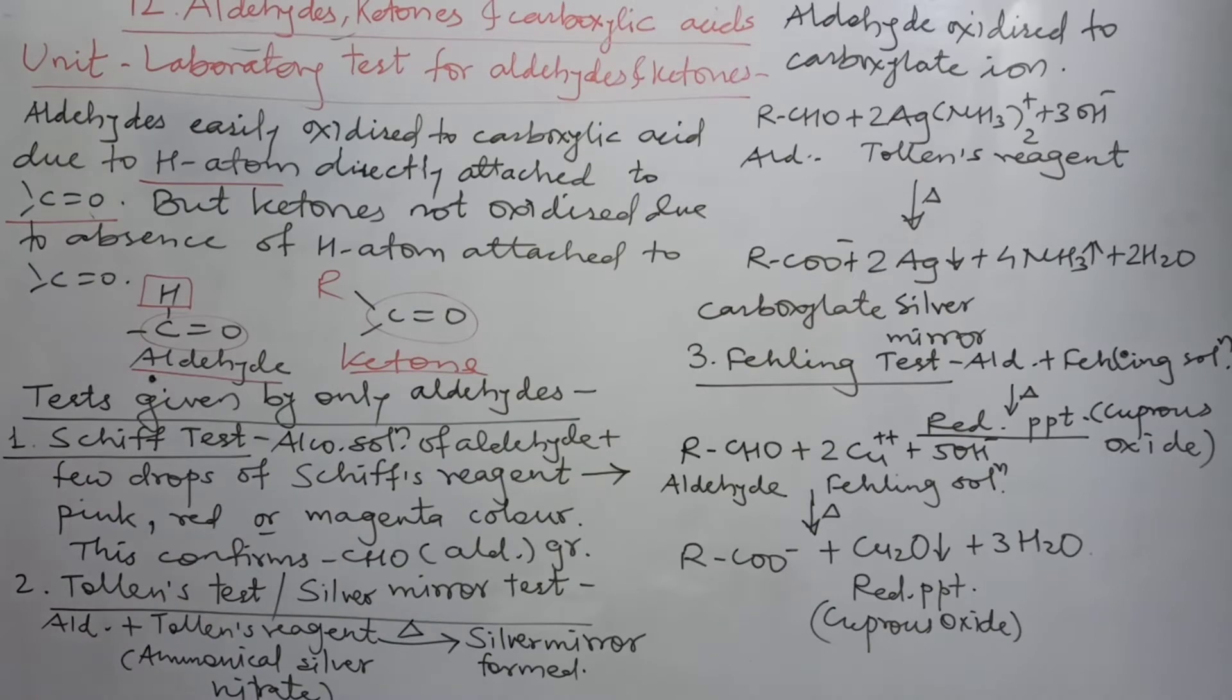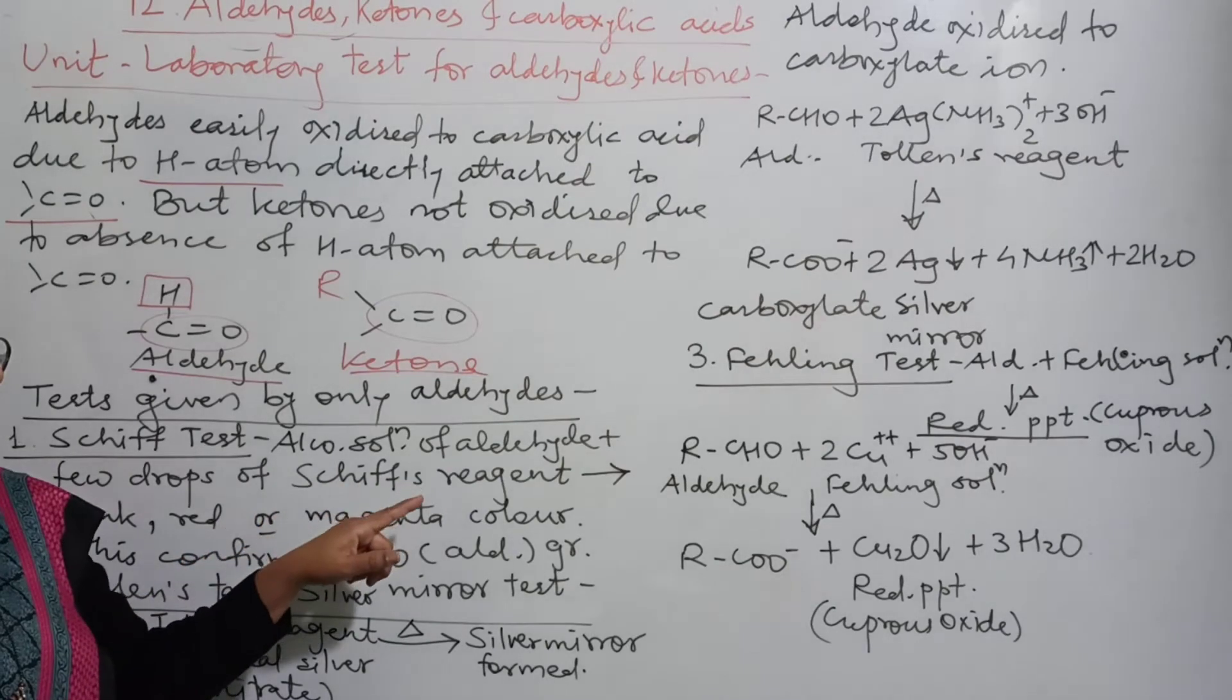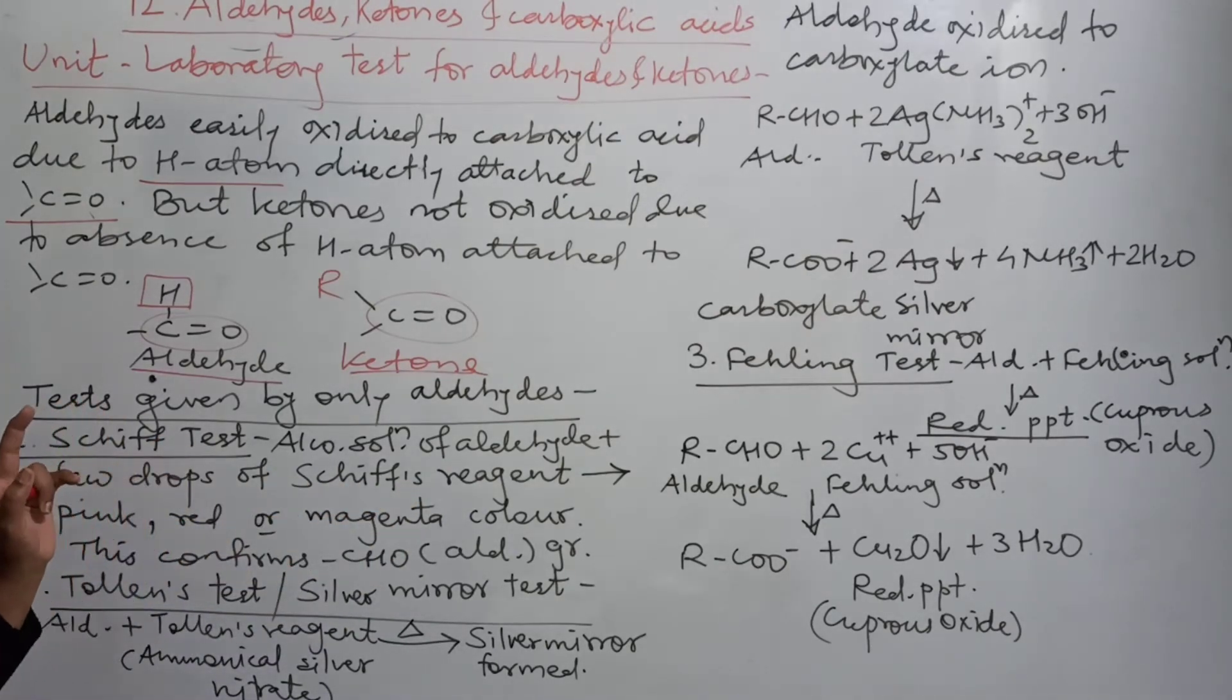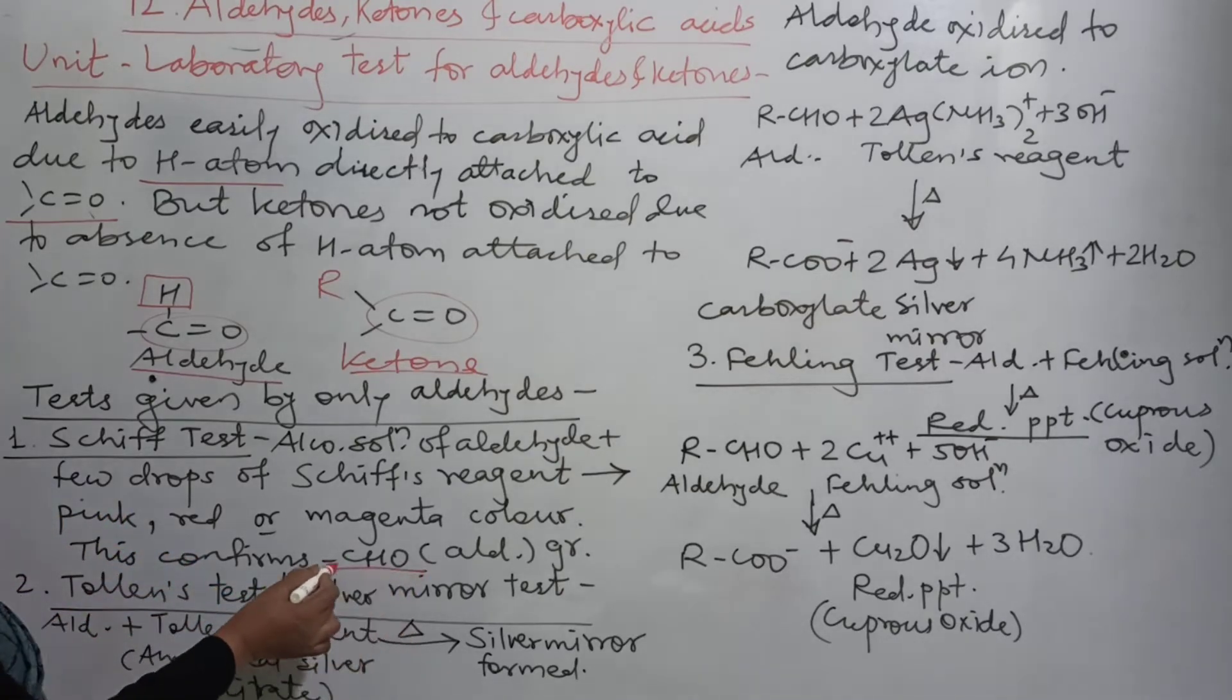And if the ketone is taken and the same reagent is added, no color is observed. So this is the point of difference between aldehyde and ketone. And this confirms the CHO group with this color test. This is very simple.